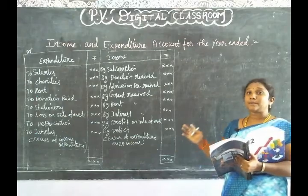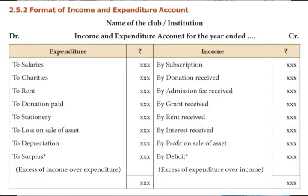We are going to see the receipt and payments. We will see the format: expenditure in rupees, income in rupees. The expenditure is on the debit side — the seller side is making all the money. The amount we receive goes to the income side, which is the credit side. This is the opposite.